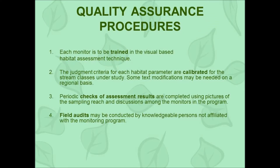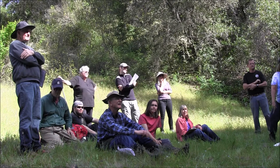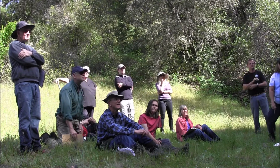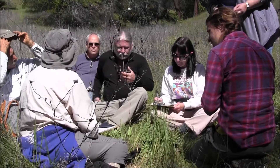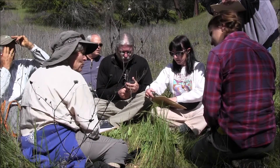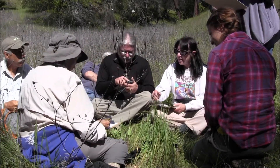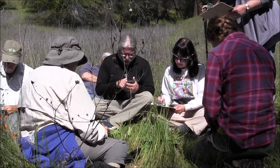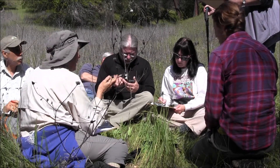Quality assurance procedures do apply to visual habitat assessments. Each monitor must be trained in the visual-based habitat assessment technique. The judgment criteria for each habitat parameter must also be calibrated for the stream class under study. Periodic checks of assessment results can be completed using pictures of the sampling reach and having discussions amongst the monitors in the program. Additionally, field audits may be conducted by knowledgeable persons not affiliated with a monitoring program.